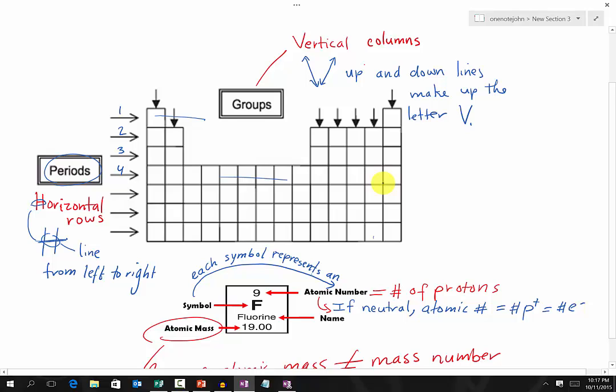Then we look at Groups. Groups are the vertical columns going down. So we have Group 1, Group 2, and so on.